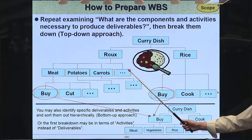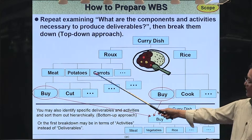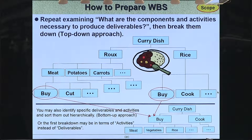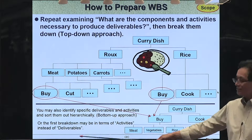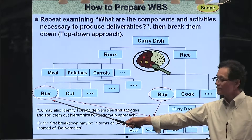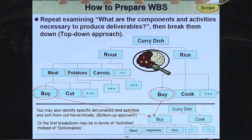A roux is made of vegetables and meat — potatoes, carrots, etc. — including some spicy ingredients. And you need some actions: go to the supermarket, buy the ingredients, then cut them.